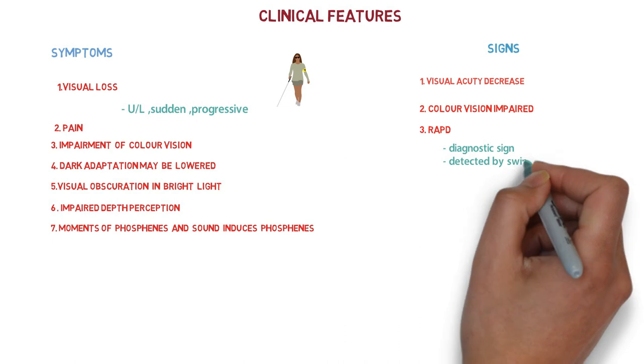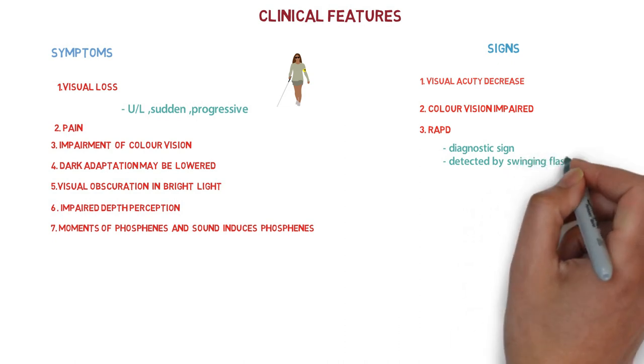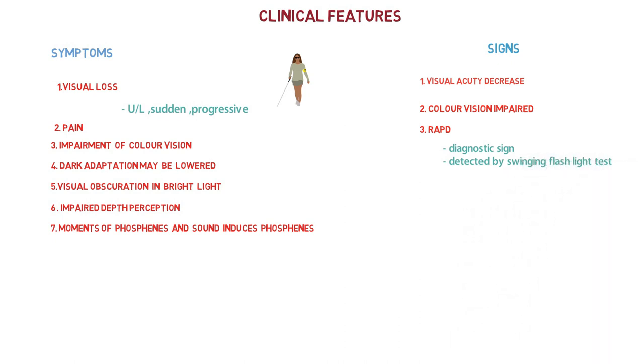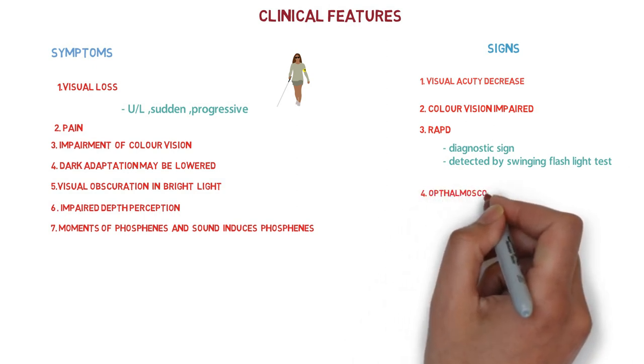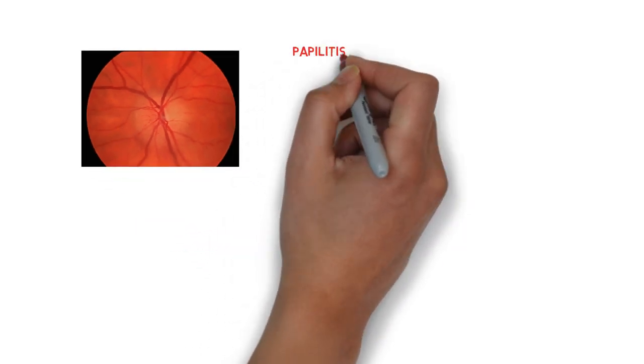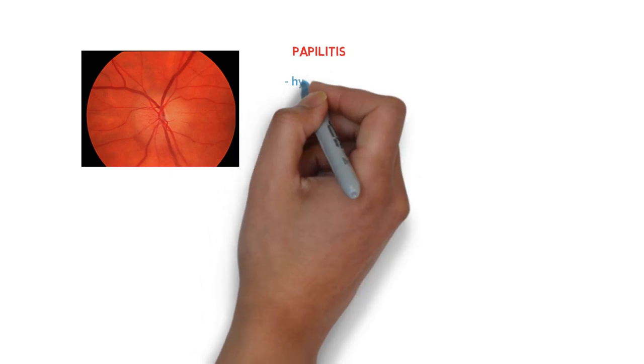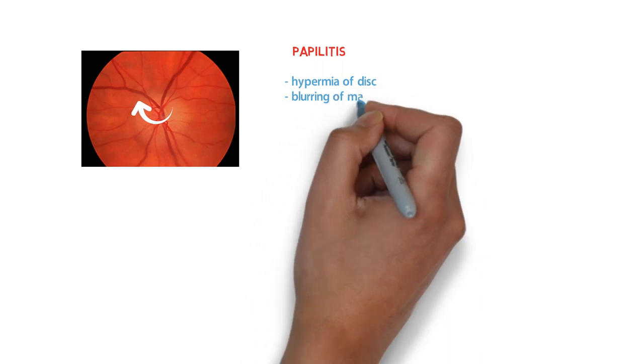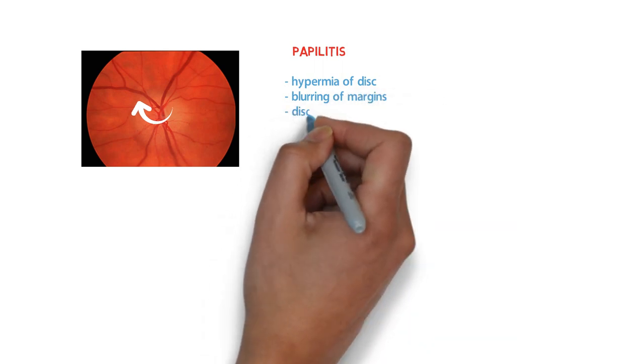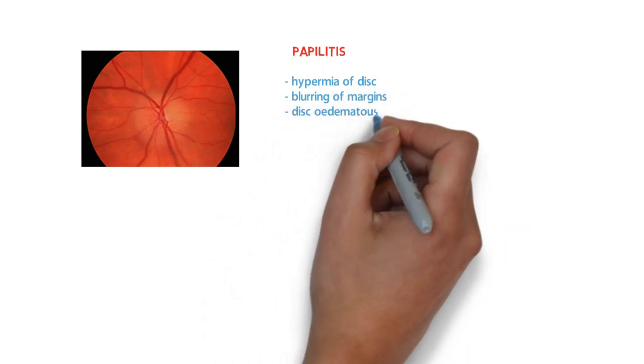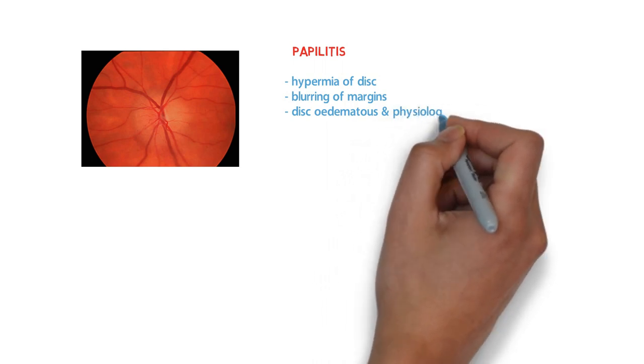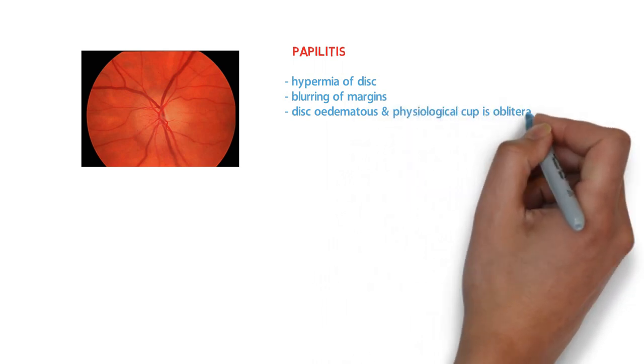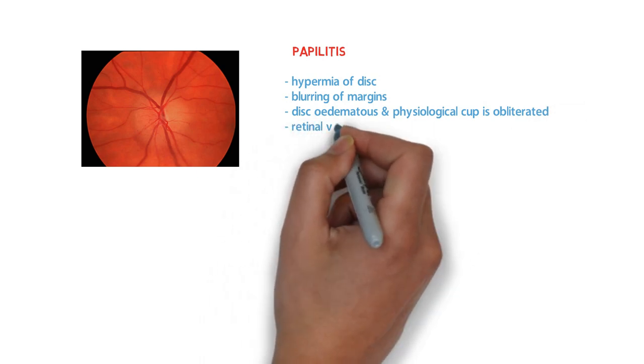Ophthalmoscopic features: first in papillitis, there may be hyperemia of disc, blurring of the margins - look over this diagram, the margins of optic disc are blurred. The disc may be edematous and physiological cup is obliterated. Look over this diagram - the retinal veins are congested and tortuous.